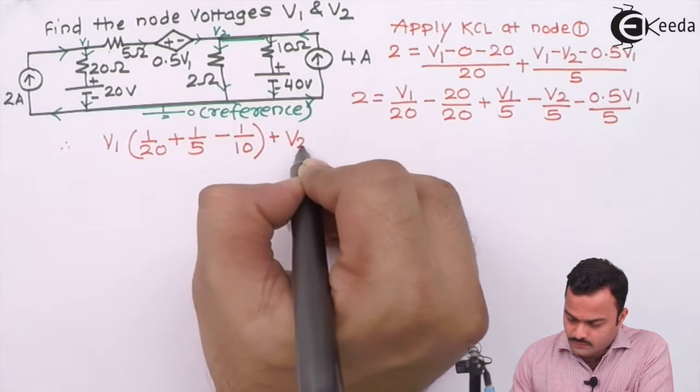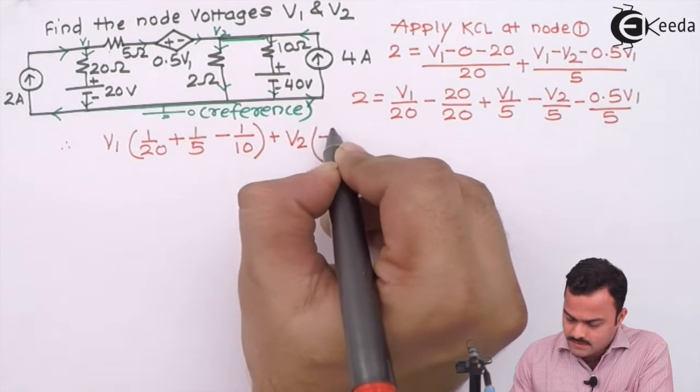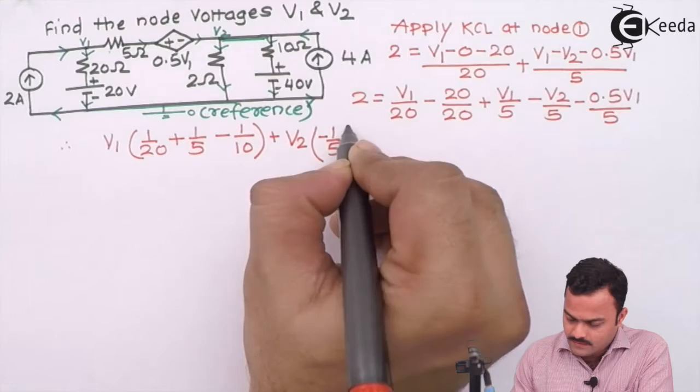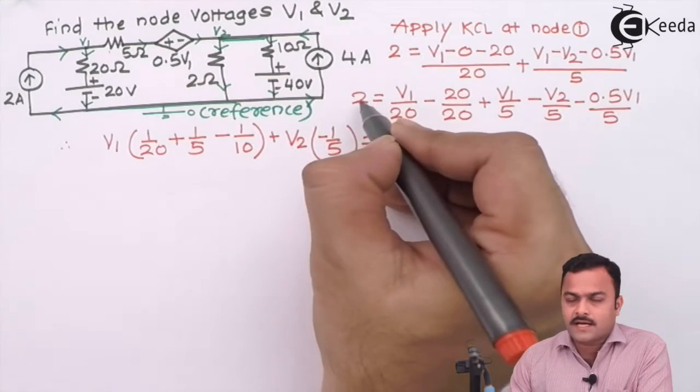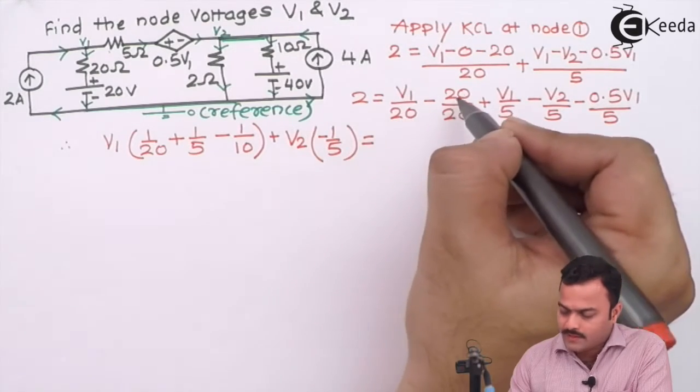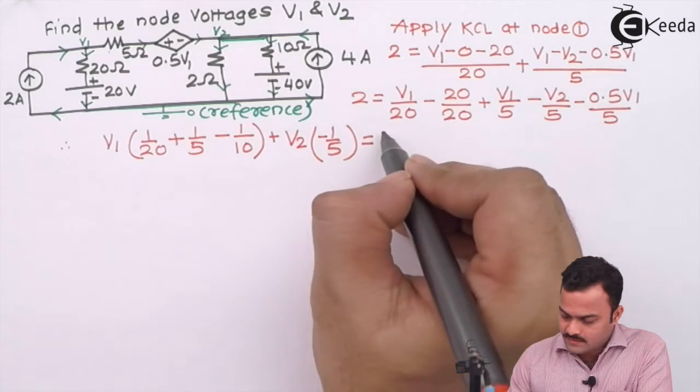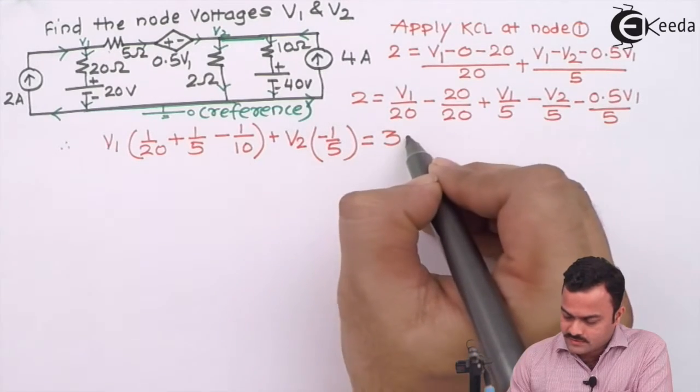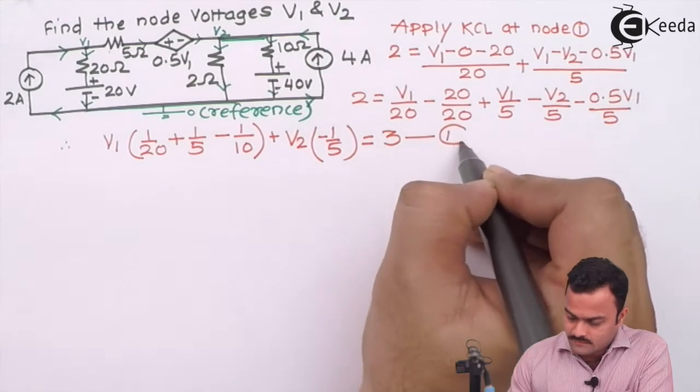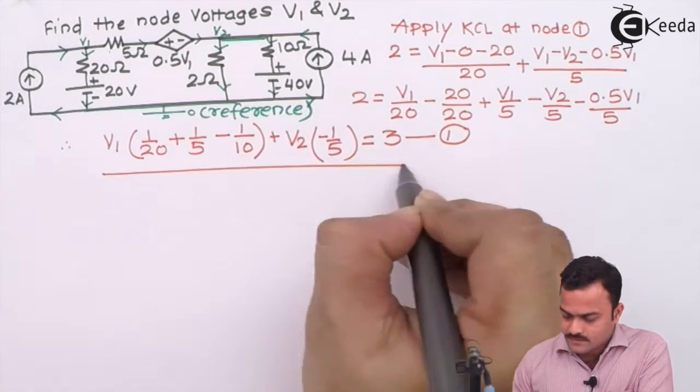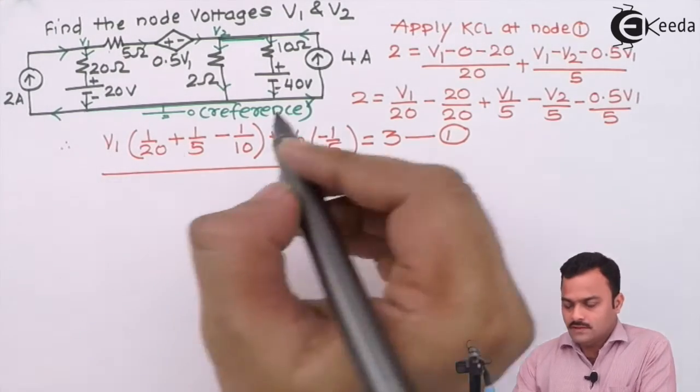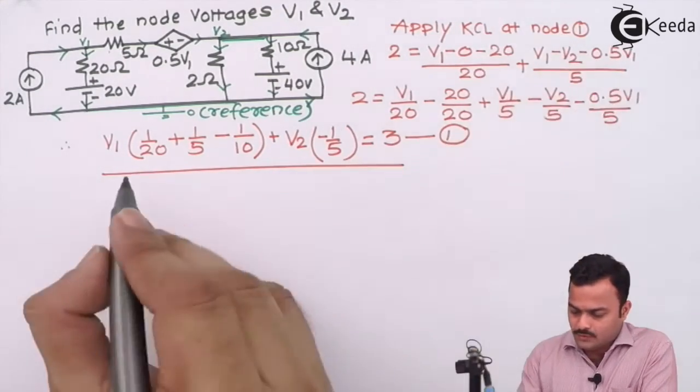Plus V2 coefficient is minus 1 by 5, and constant on this side was 2 already present. 20 by 20 is minus 1, over here will come on this side, so in the end the total constant is 3. This is equation number 1. Let's apply KCL at node 2.